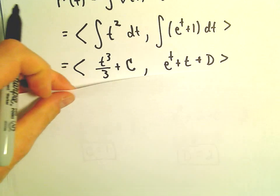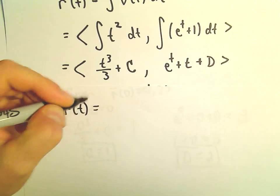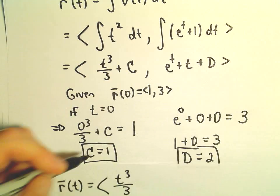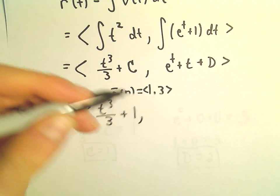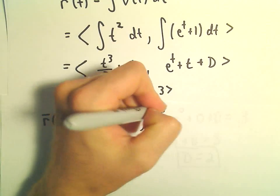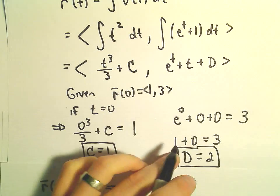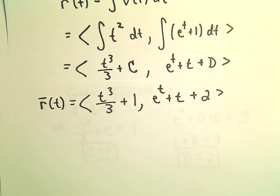So we know that we can describe our position vector r(t) as <t³/3 + c, e^t + t + d>, which is <t³/3 + 1, e^t + t + 2>.